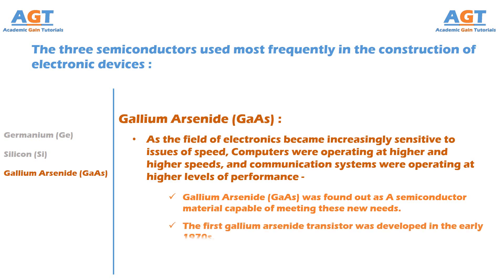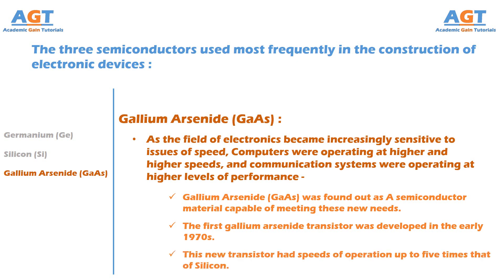The result was the development of the first gallium arsenide transistor in the early 1970s. This new transistor had speeds of operation up to five times that of silicon.